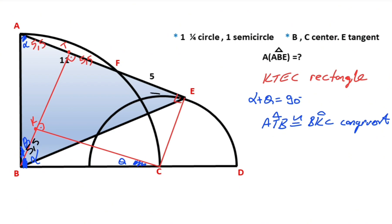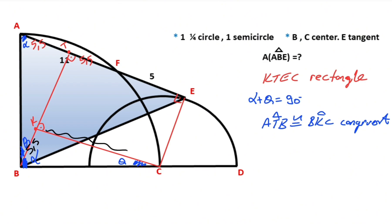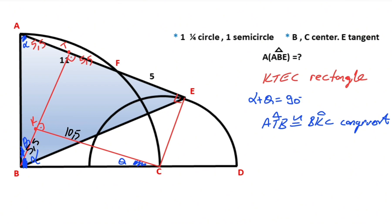If here is 10.5, that means this length must also equal 10.5. Then if there is 10.5, the side opposite alpha must equal 10.5. So if this side is 5.5, that means 5 units are left here.